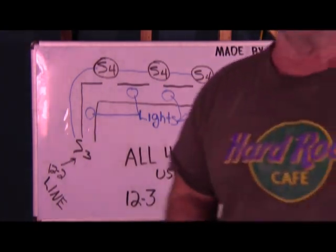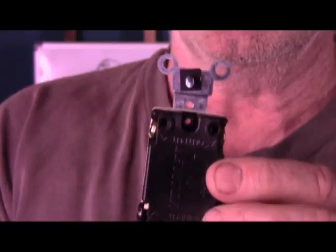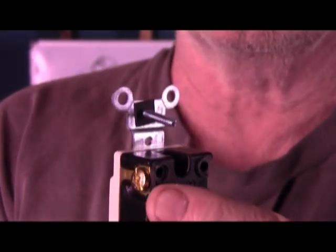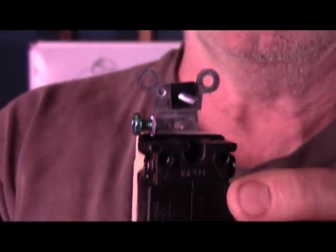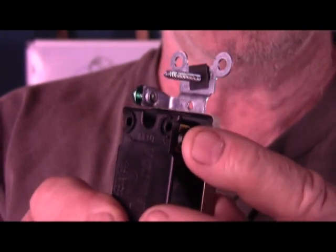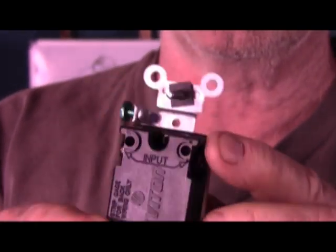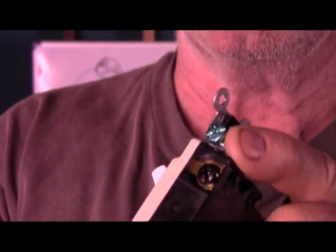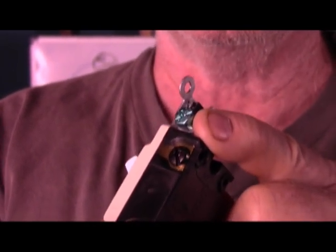Let's take a look up close at a four-way switch. You have two copper-colored screws on either side and then you have two black screws on either side. You also have a ground, which is very important because you have to ground all outlets.